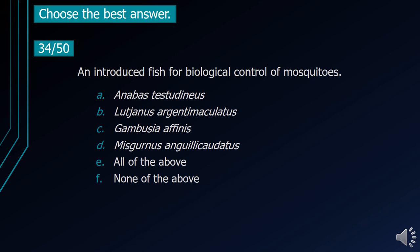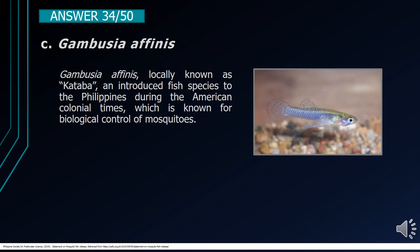Number 34. An introduced fish for biological control of mosquitoes. A. Anabas testudineus. B. Lutjanus argentimaculatus. C. Gambusia affinis. D. Misgurnus anguillicaudatus. E. All of the above. F. None of the above. The correct answer is letter C, Gambusia affinis, locally known as cataba, an introduced fish species to the Philippines during the American colonial times, known for biological control of mosquitoes.